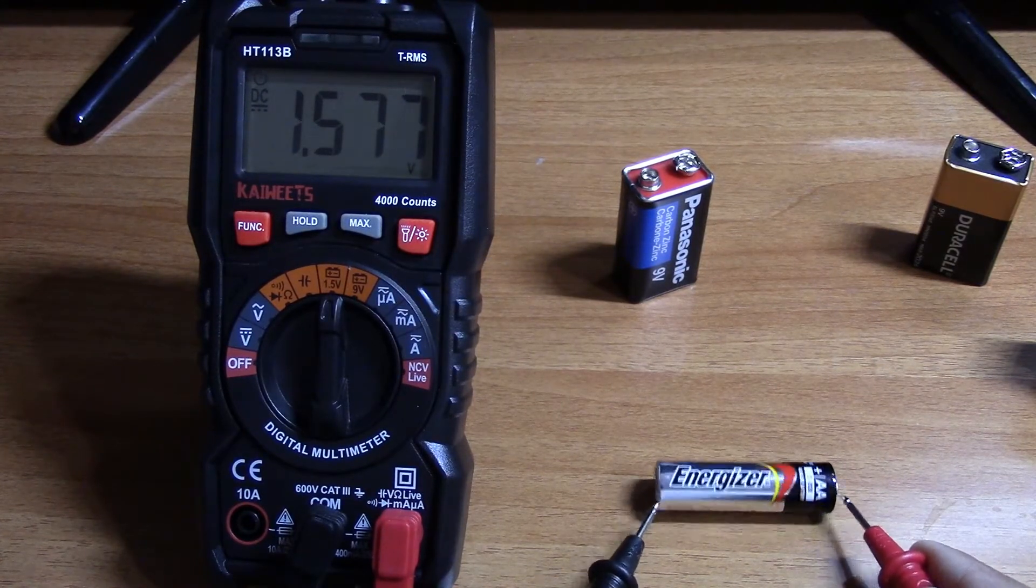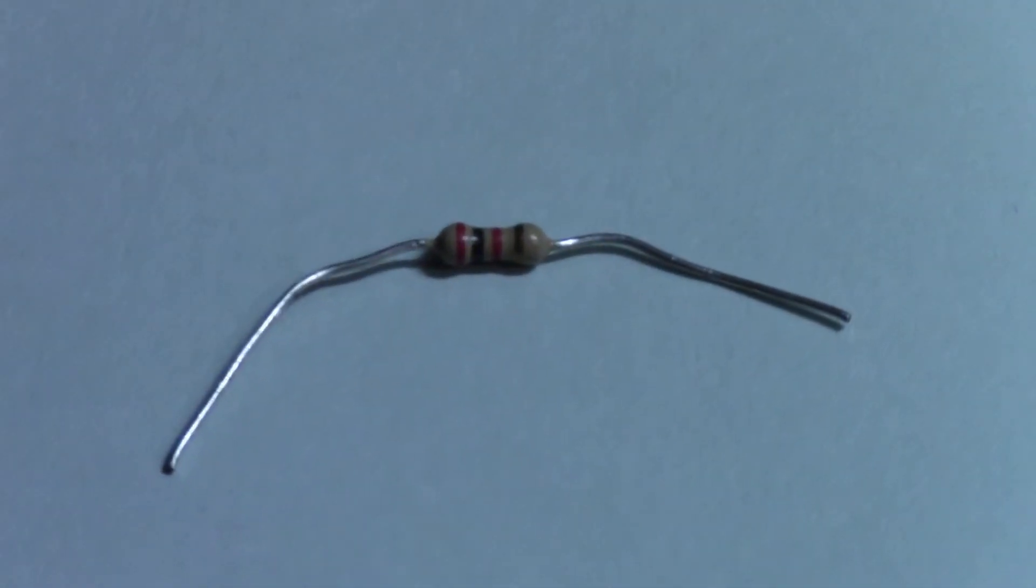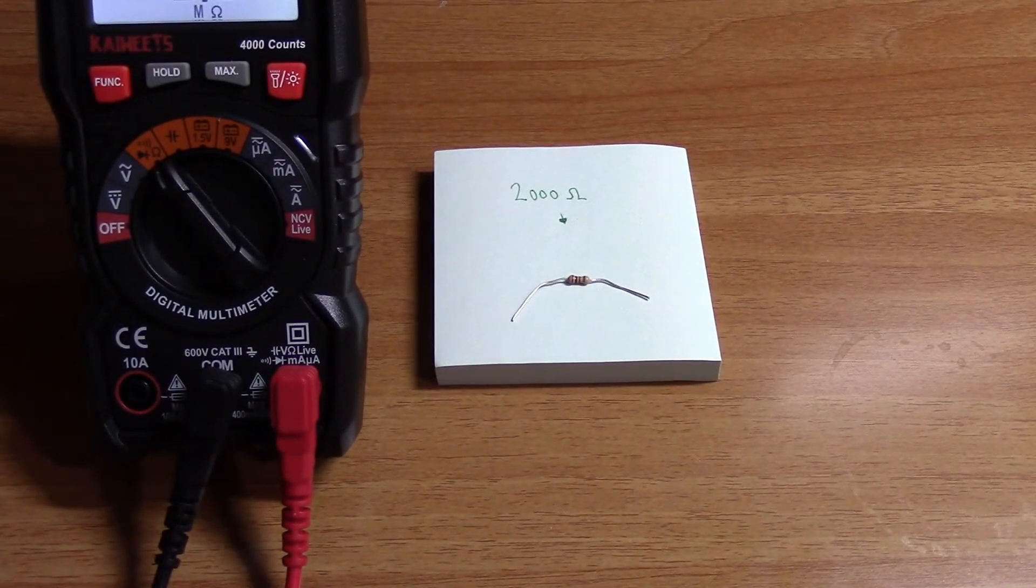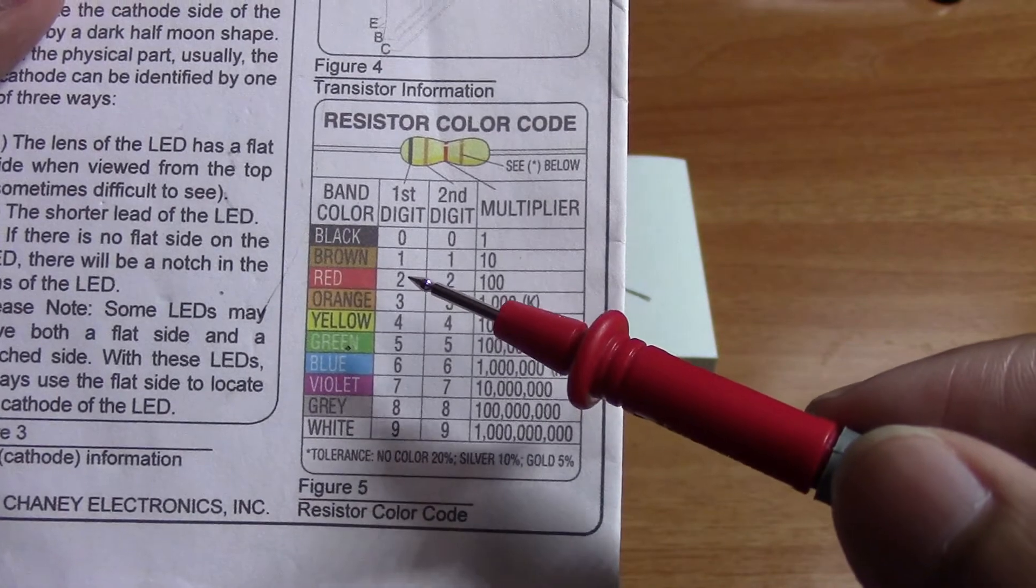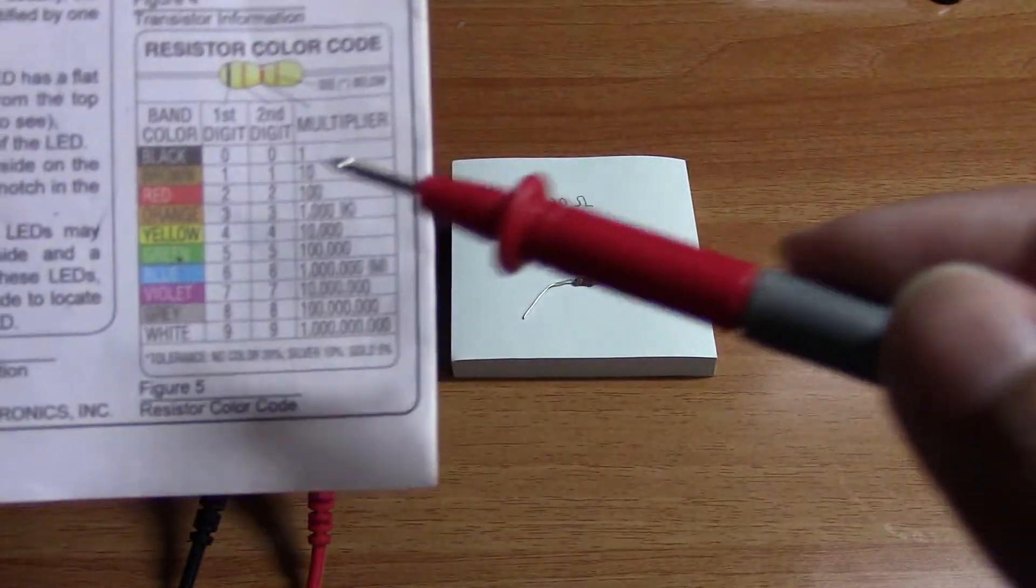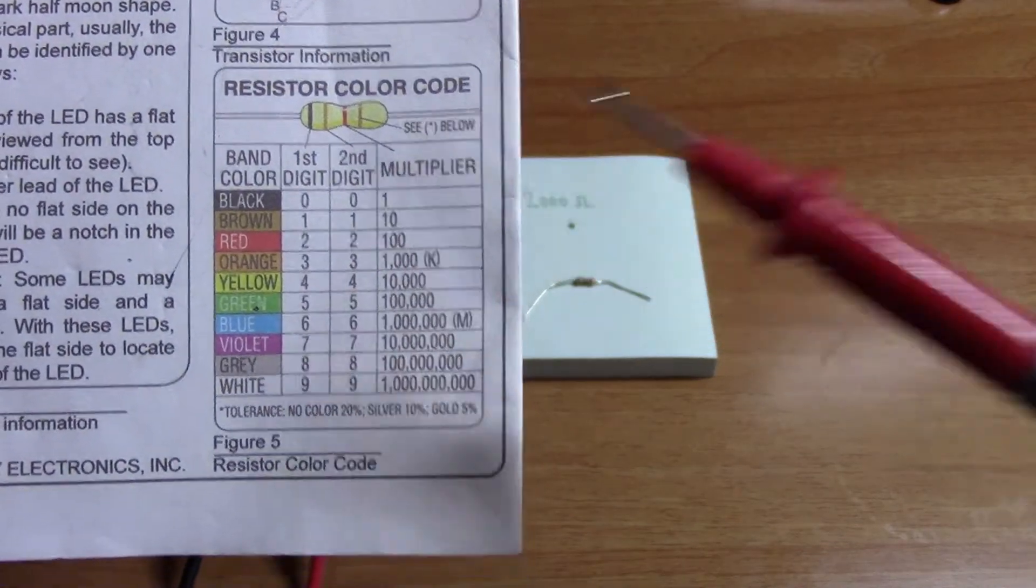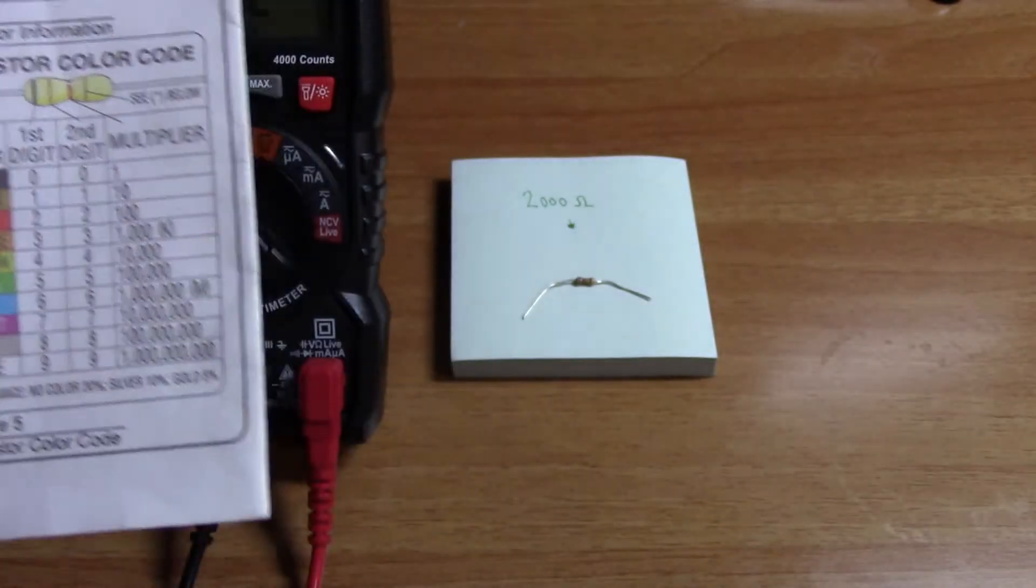Next we will be testing resistance. Here we have a resistor, it has red, black, red, and a gold band. It has 2,000 ohms and we could tell by the color chart. The first band is red, that's 2. Second band is black, that's 0, so that's 20. The third is red, so it'll be 20 times 100, which is 2,000. The last band is gold, so the tolerance is 5%. 2,000 ohms give or take 5%.